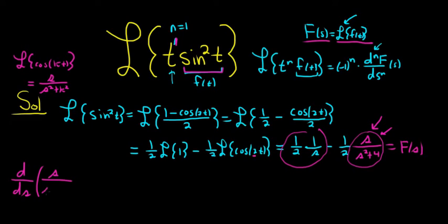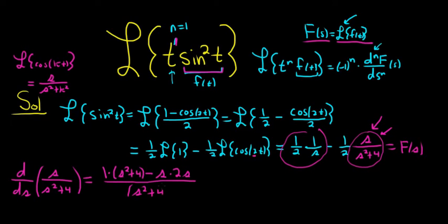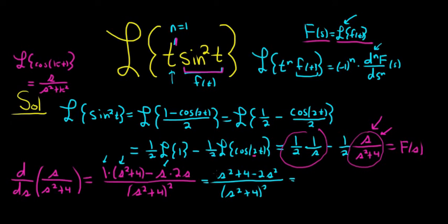Using the quotient rule on s over s²+4: the derivative of the top is 1 times the bottom, minus the top times the derivative of the bottom, which is 2s, all over the bottom squared. That gives s²+4 minus 2s², all over (s²+4) squared. Simplifying 1·s² minus 2s², we get negative s² plus 4, all over (s²+4) squared.